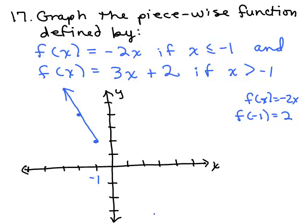Now, the next part is f(x) equals 3x + 2 if x is greater than -1. So we know there's not going to be a dot when you plug in -1, but there will be a circle.